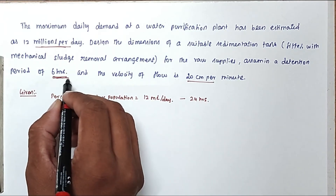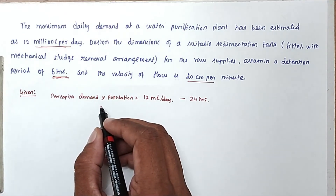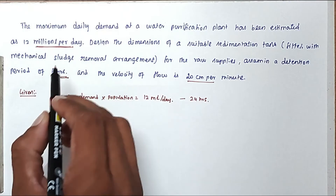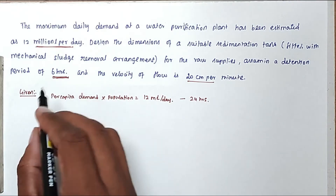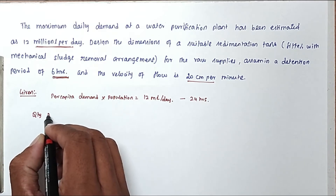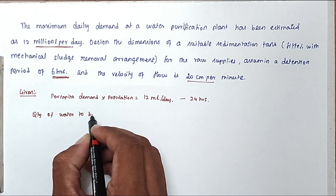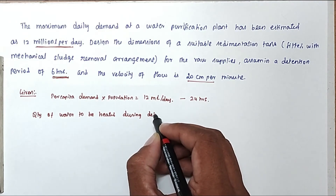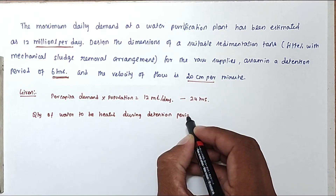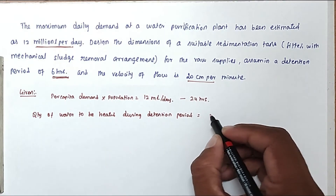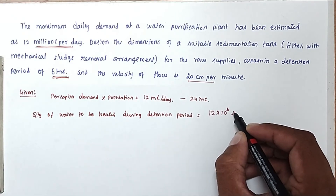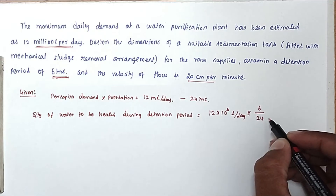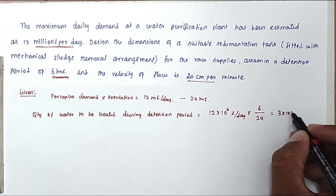The retention period is only 6 hours. We need to find the dimension and volume of the sedimentation tank — the water is retained in the tank for only 6 hours per day. So the quantity of water to be treated is determined during the detention period: 12 × 10⁶ liters per day × 6 hours ÷ 24 hours, giving us 3 × 10⁶ liters.